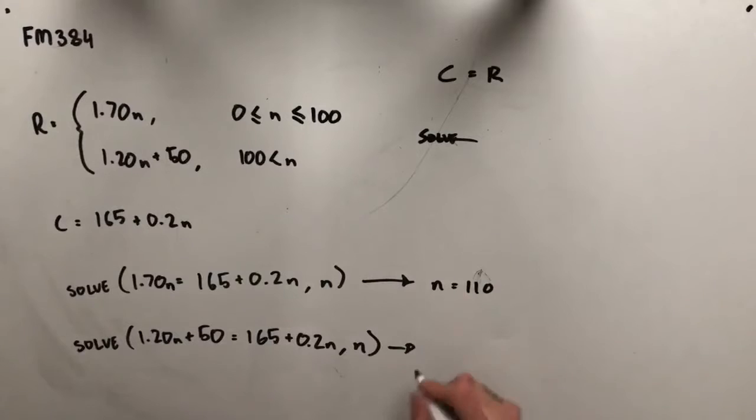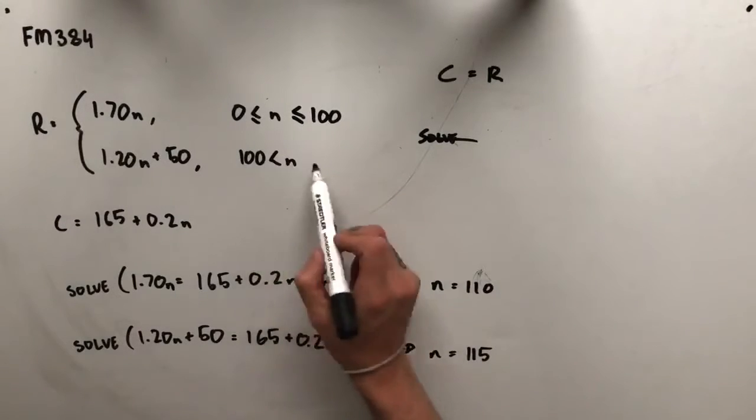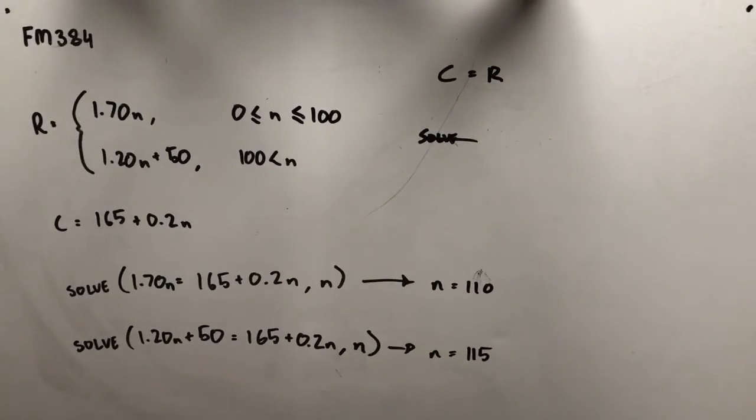Putting that into a calculator should tell us that N is equal to 115. So when we sell 115 of these cheese and Vegemite rolls, that's when our cost is equal to our revenue. Now, we've got an N value of 115. That fits in with the constraints we've been given to begin with.